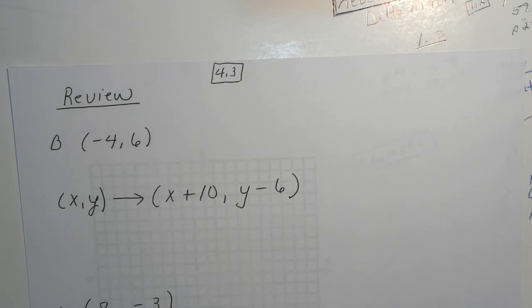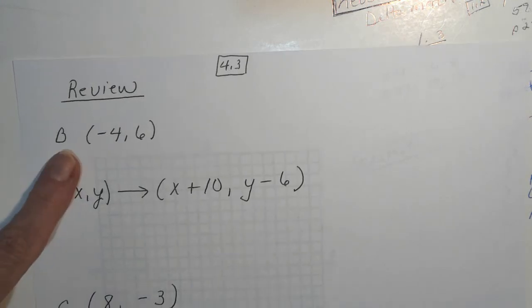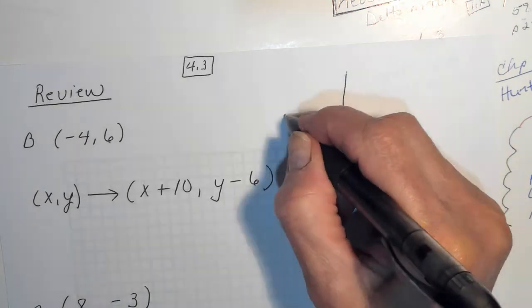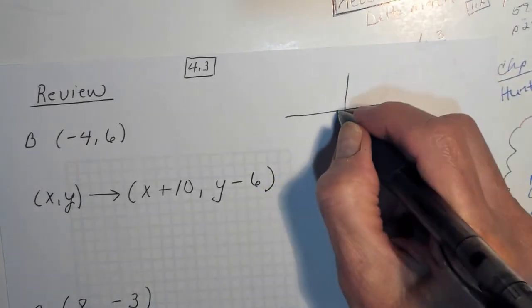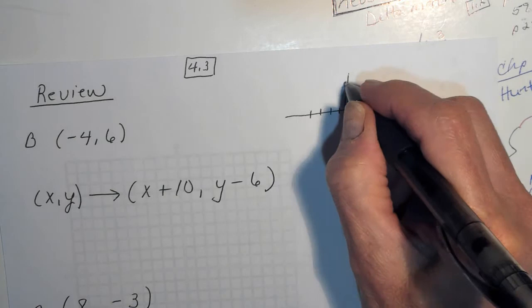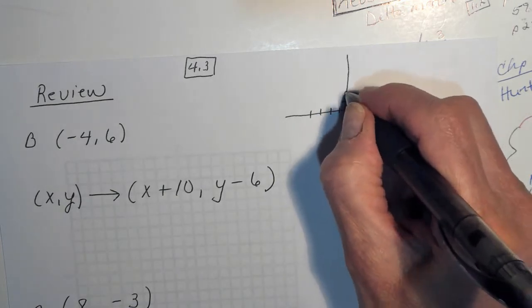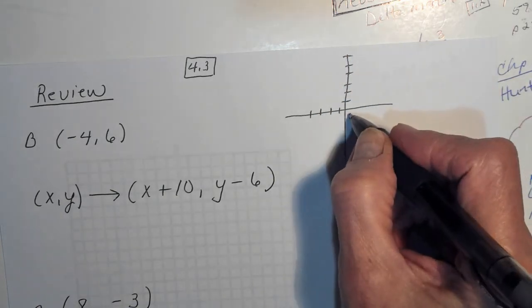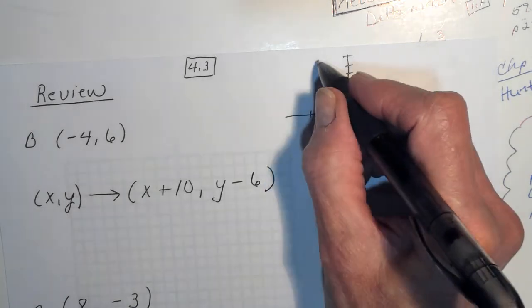Get out a piece of paper, please. Let's say we've got point B, and it's at negative 4, 6. If you want to do a rough sketch, you can. Let's plot that — negative 4, 6. So left and up.